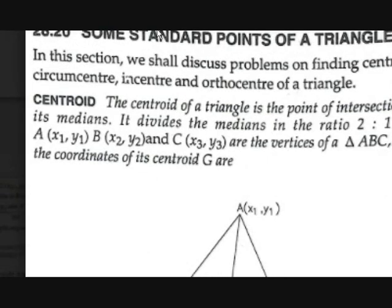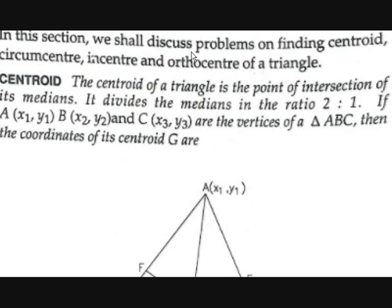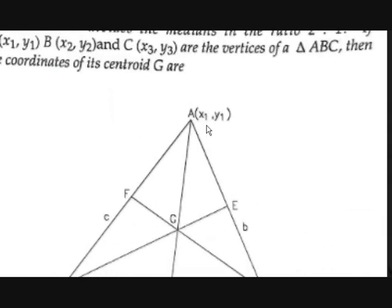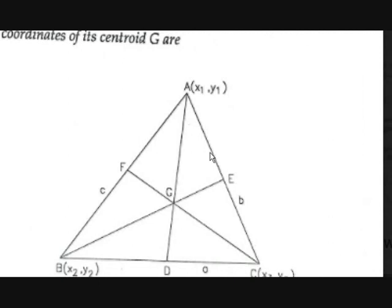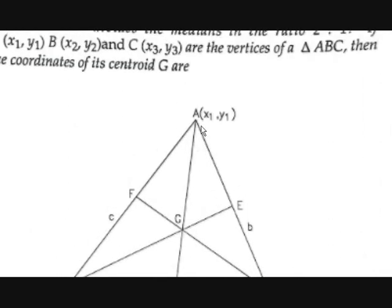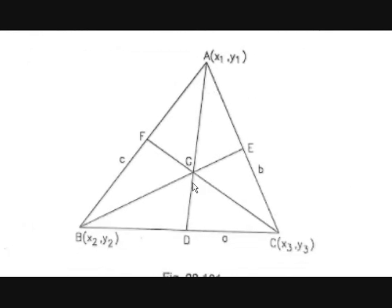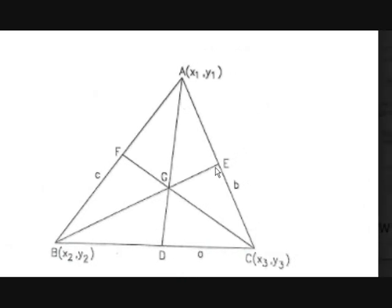The speciality of circumcenter is that if we draw a circle with the circumcenter as the center and any vertex of the triangle as a point on the circle, then the circle passes through all the vertices A, B, and C. For the incenter, if we draw a circle with the incenter as the center and touch that circle to any one of the sides, it touches all the remaining sides — meaning it touches all three sides.